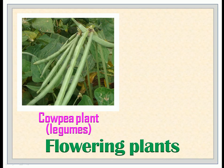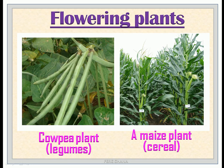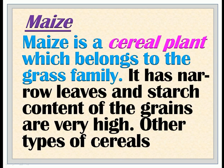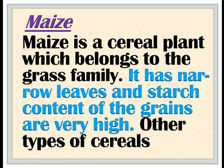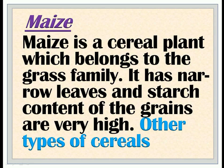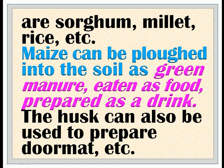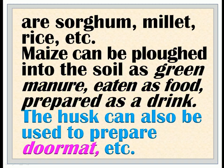This picture illustrates flowering plants. Maize is a cereal plant which belongs to the grass family. It has narrow leaves and the starch content of the grains is very high. Other types of cereals are sorghum, millet, rice, etc. Maize can be ploughed into the soil as green manure, eaten as food, or prepared as a drink. The husk can also be used to prepare doormats, etc.